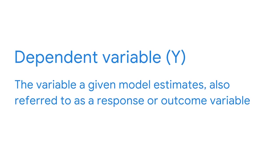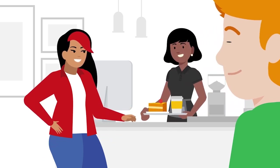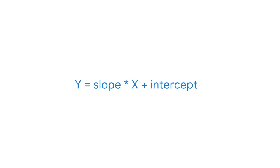Throughout this course, we'll talk about dependent and independent variables. The dependent variable is the variable a given model estimates — sometimes also called a response or outcome variable, commonly represented with the letter Y. We assume that the dependent variable tends to vary based on the values of independent variables, typically represented by X. Independent variables are also referred to as explanatory variables or predictor variables. For example, let's say you're working at a cake shop and you're trying to understand the factors that contribute to cake sales. The dependent, or Y variable, would be the number of cake slices sold on any given day.